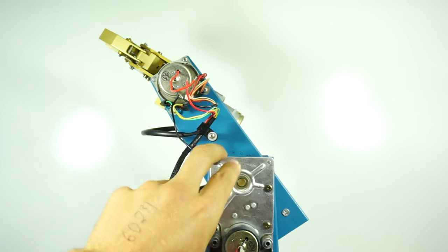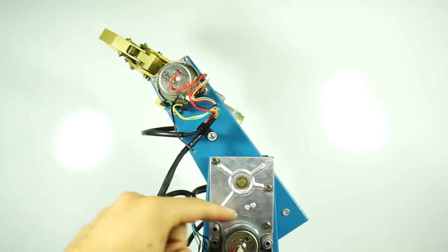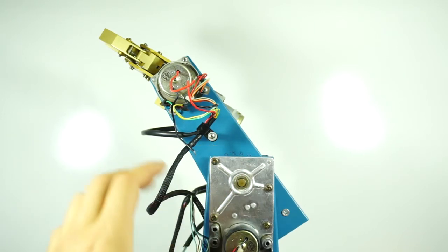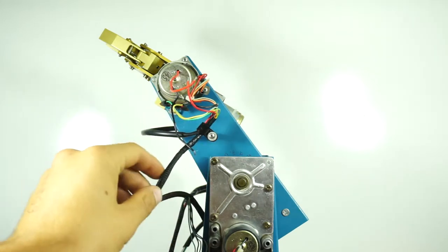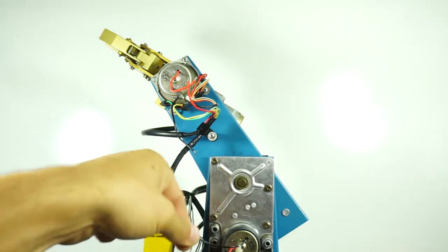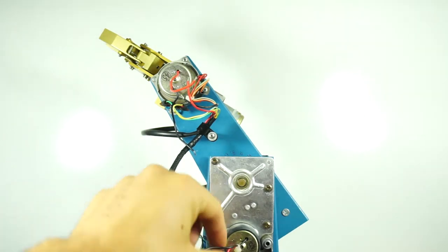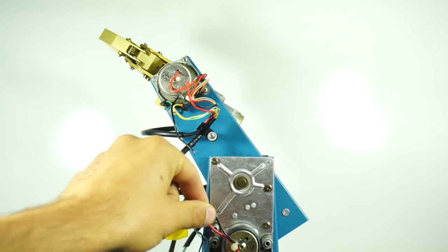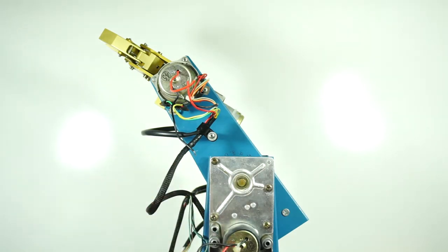So how this works is we have a motor here and then on the other side we have a potentiometer. That's on the other side so you can't see it. Essentially what we've done is we've hooked up the two motor wires to the BAMR motor driver. It's just a DC motor so easy to drive. And then we've also hooked the pot straight into the controller.